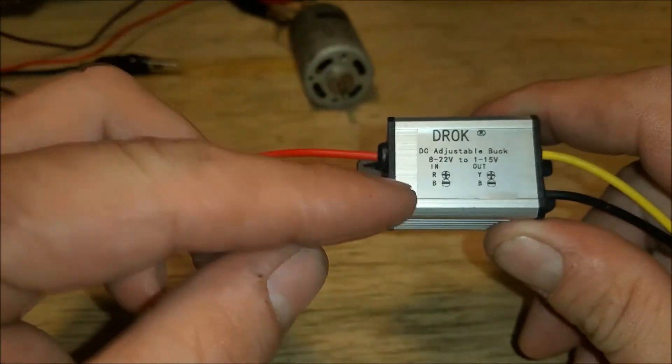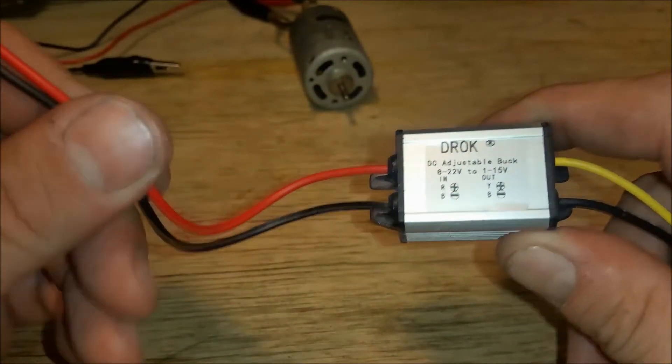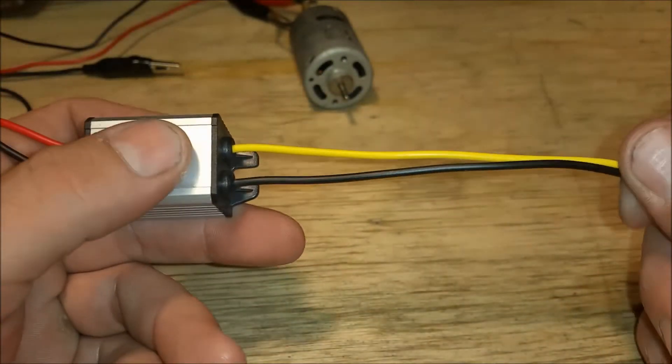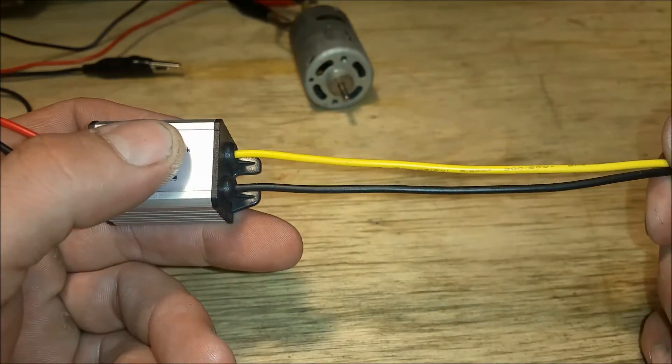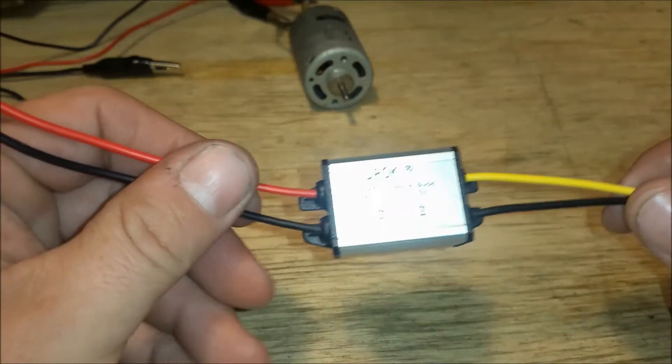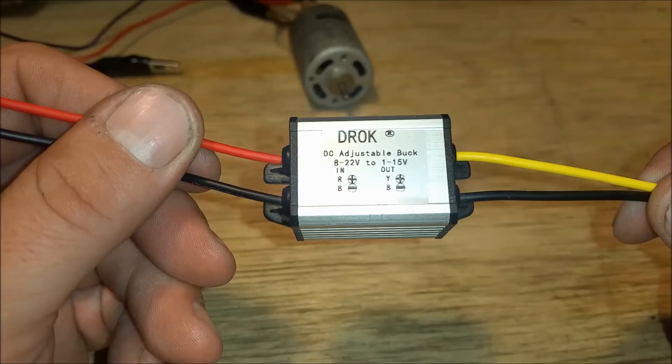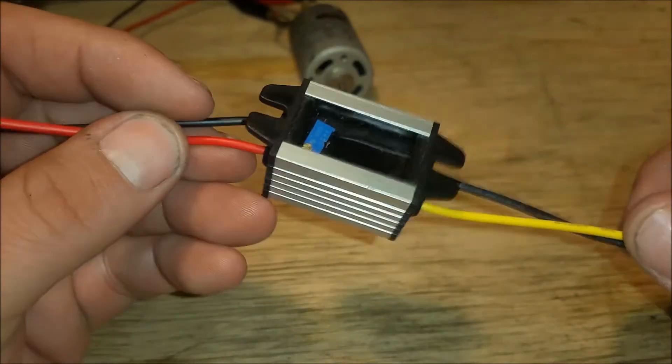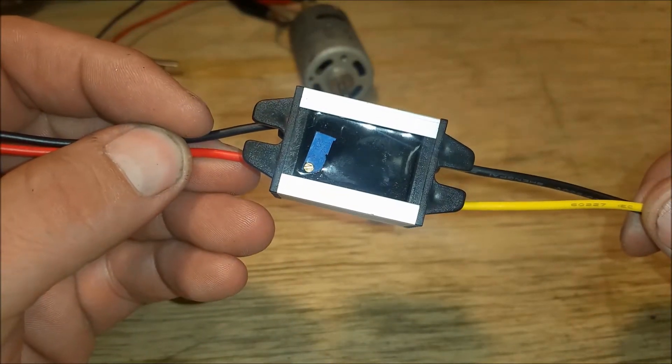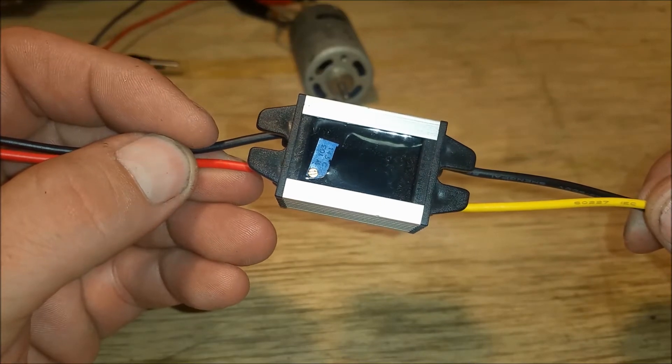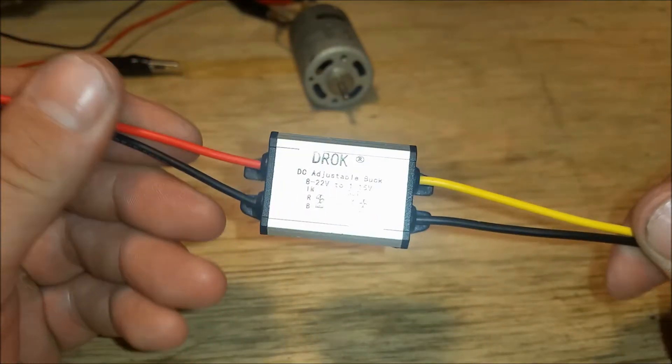The schematic here shows that these are the input leads, the red and the black, and these are the output leads, the black and the yellow. The way that you adjust the voltage is there's this little pot on the bottom here.